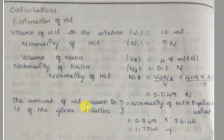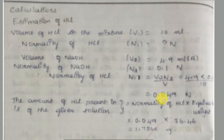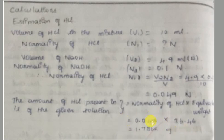The amount of hydrochloric acid present in one liter of the given solution equals normality × equivalent weight. Normality of HCl = 0.049, equivalent weight of HCl = 36.46. This gives the amount of HCl, which equals 1.765 grams per liter.